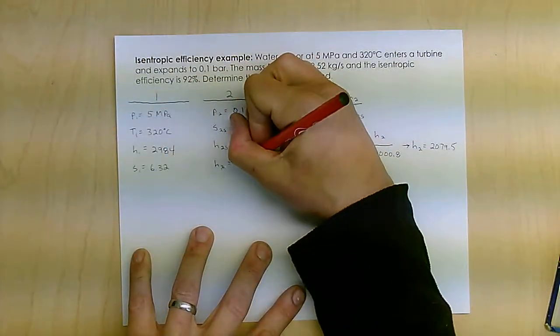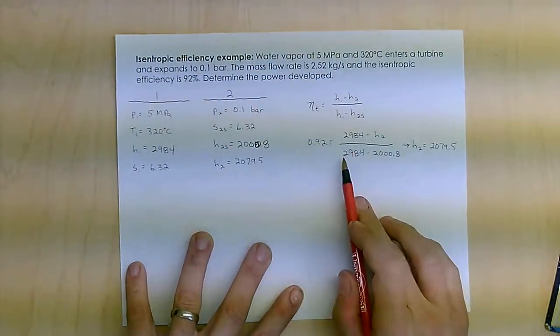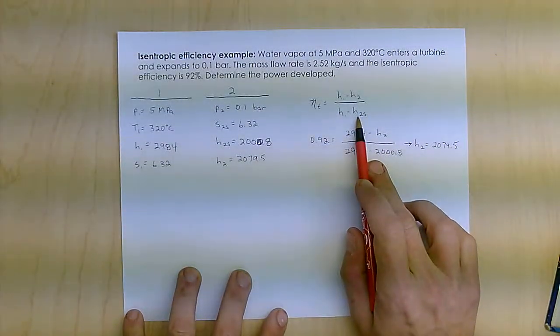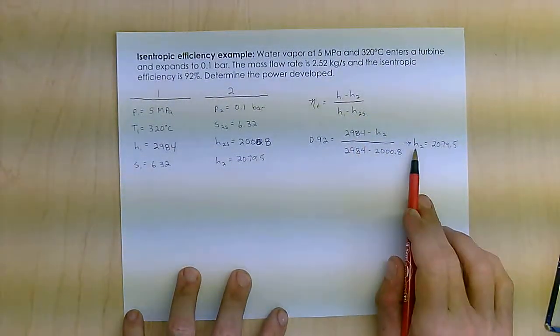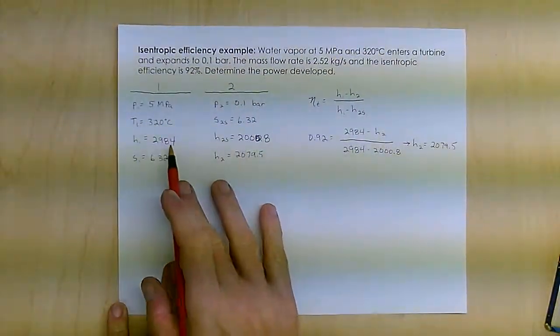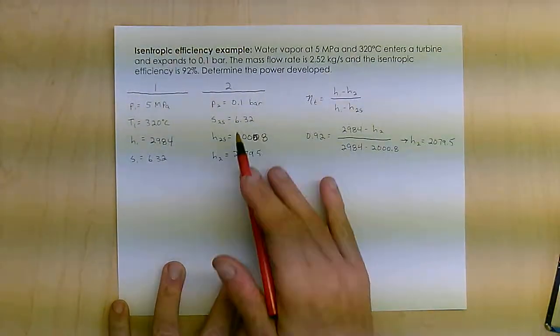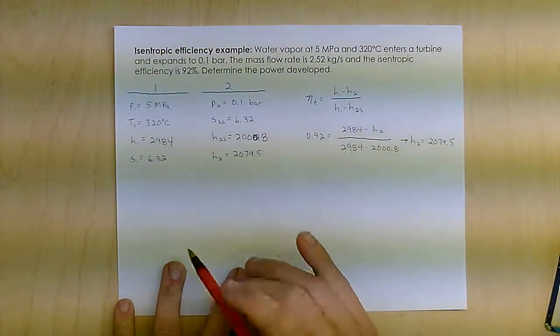So I can't get the best-case scenario. I only get 92% of it. So I figure out the best-case scenario and then figure out what would happen if I only got 92%. Instead of having this large delta H, H can't drop quite that far going through that turbine because of that isentropic efficiency.